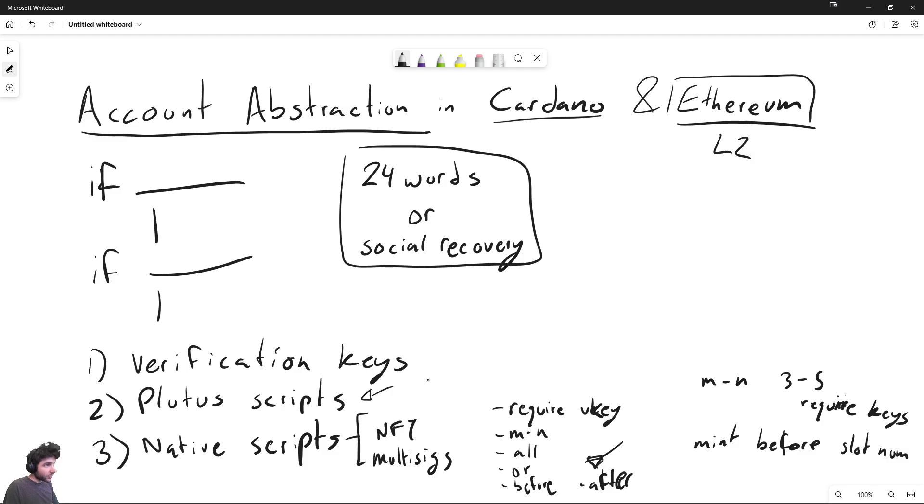So first, let's talk about the four key parts in Cardano where smart contracts are treated differently from VKeys, these standard user account wallets. And the first one is stake pools. So in stake pools, the pool owners have to be VKeys. So you cannot have a stake pool that's owned by a smart contract.